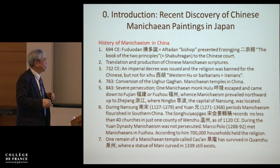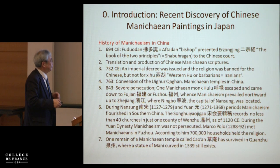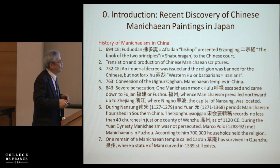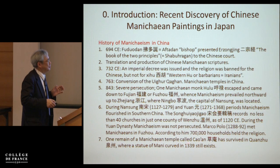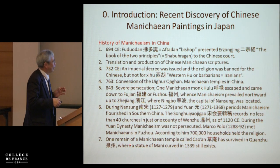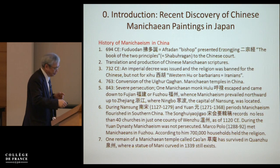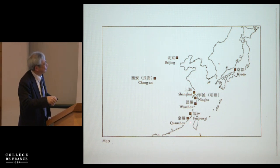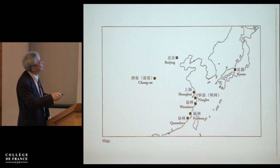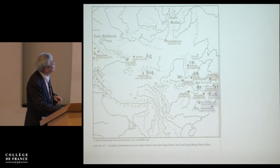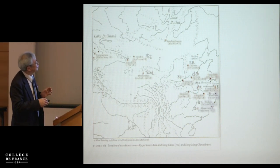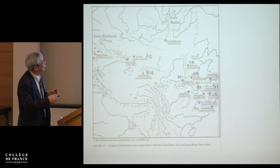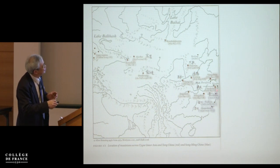We have a very remarkable survival from this period. There is one very famous Manichaean portrait sculpture of Mani in Cao'an in Quanzhou. This is the map showing Quanzhou, Fuzhou, Wenzhou, Ningbo and so on. The Uyghur asked the Chinese Emperor to build Manichaean temples in Taiyuan, Chang'an, Luoyang and several other places in southern China. The famous Mani statue was built in 1339, still in the Mongolian period.